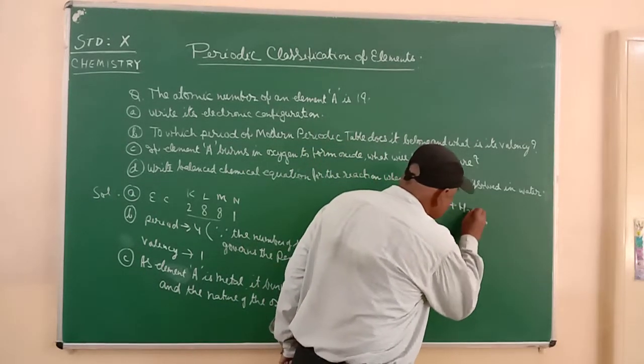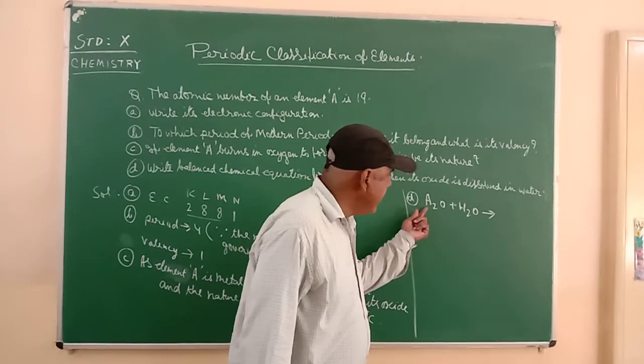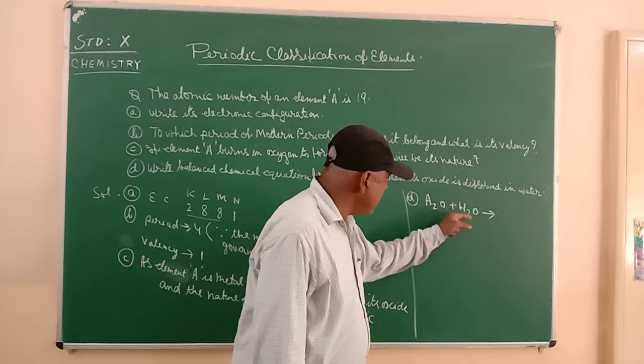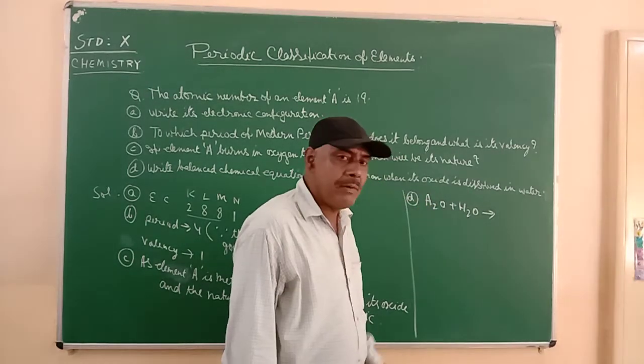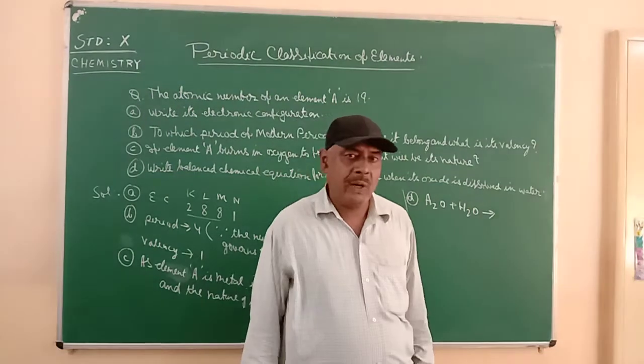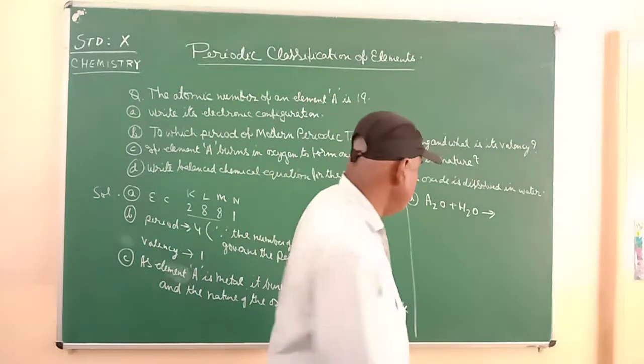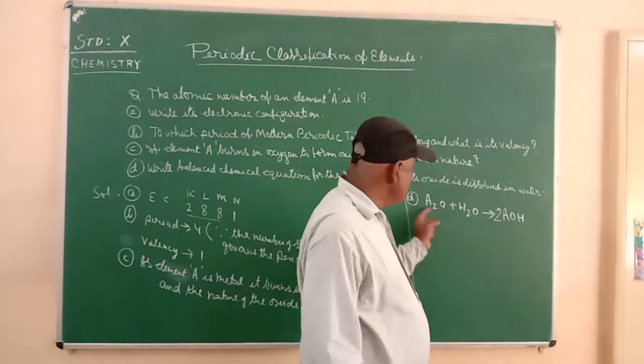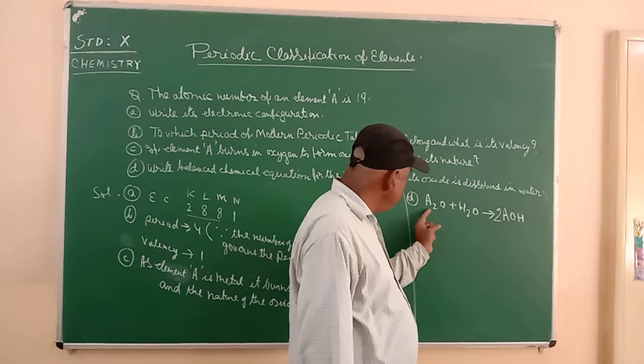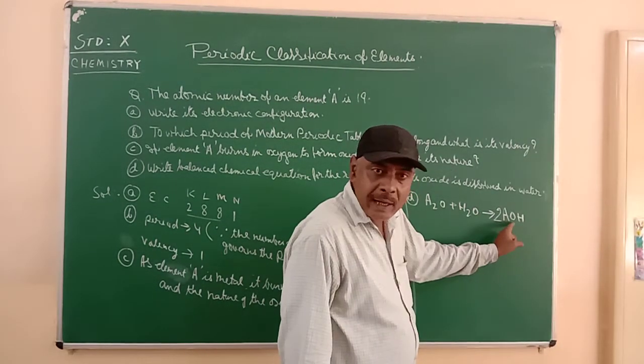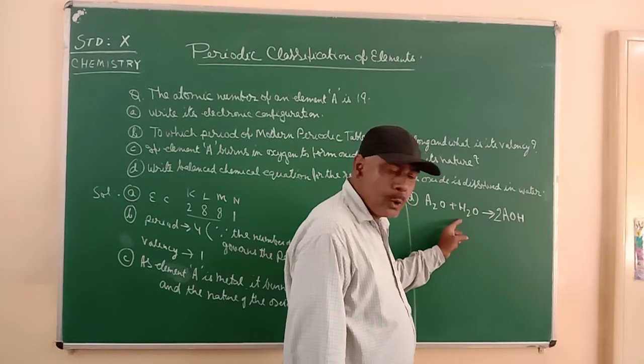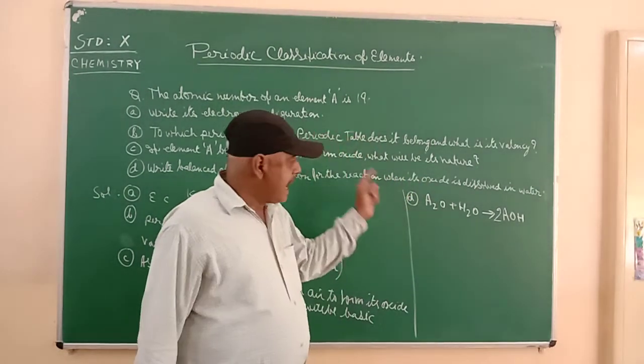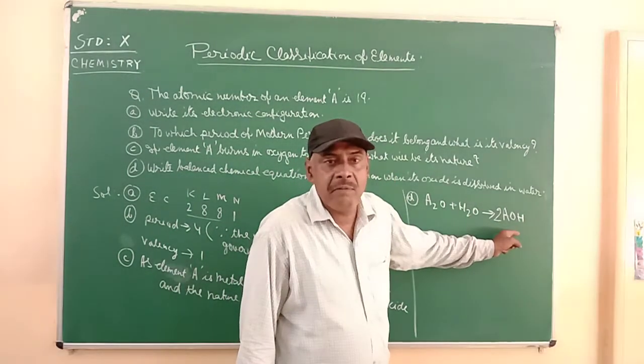Now it is reacting with water: A2O plus H2O. As this oxide A2O will dissolve in water, it will form its respective hydroxide, that is AOH with 2 in the front. Because we have to balance the chemical equation: two atoms of A here and also two atoms of A there, two atoms of oxygen on the left-hand side and also two atoms of oxygen on the right-hand side. When A2O, that is a metal oxide, reacts with water or is dissolved in water, it is going to form its respective hydroxide.